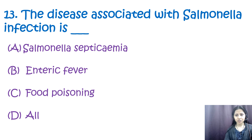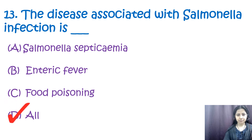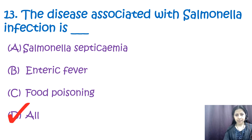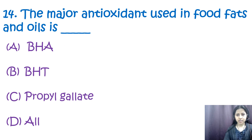Question number thirteen: the disease associated with Salmonella infection is — a) Salmonella septicemia, b) enteric fever, c) food poisoning, d) all. The correct option is d, all. Salmonella septicemia is a serious condition where Salmonella bacteria enter the bloodstream and spread to other organs. Enteric fever is a systemic infection caused by Salmonella typhi or Salmonella paratyphi, transmitted through fecal-oral routes. Food poisoning is the most common form, caused by various Salmonella serotypes.